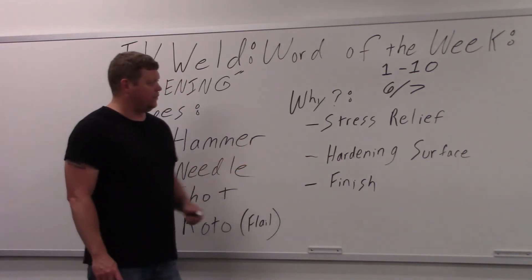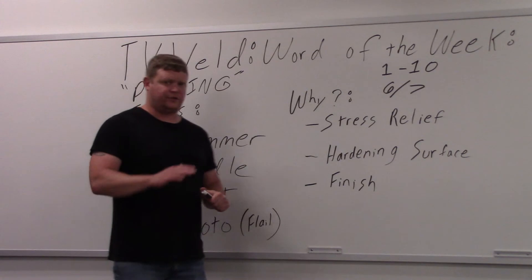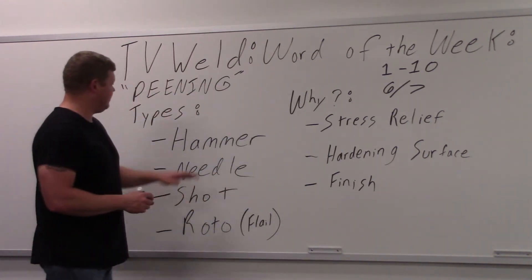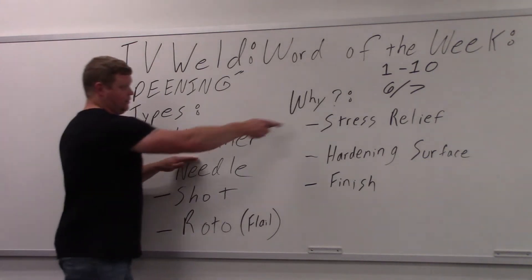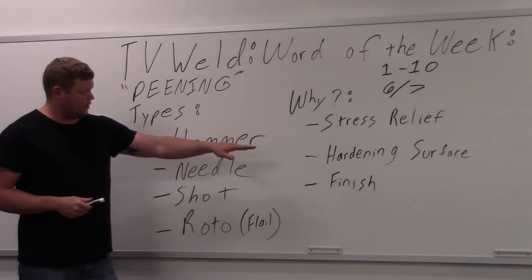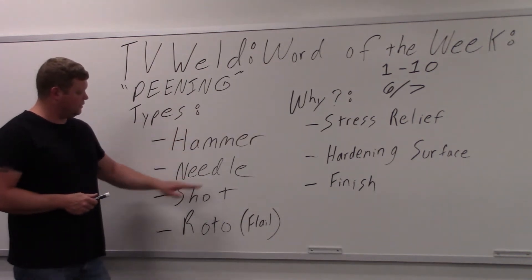Hardening surface: if you're producing something and you want the surface to be hardened, they'll tend to peen it. Let's go over here to hammer. We just went over hammer—that's stress relief. You're going to relieve stress by hitting it with a hammer. The hardening of the surface is going to be your needle, your shot, and your roto.